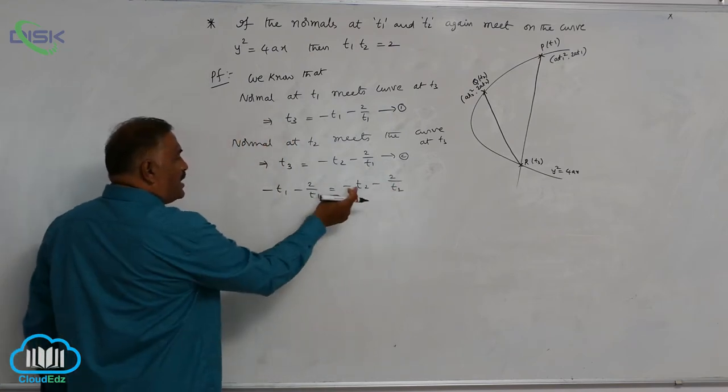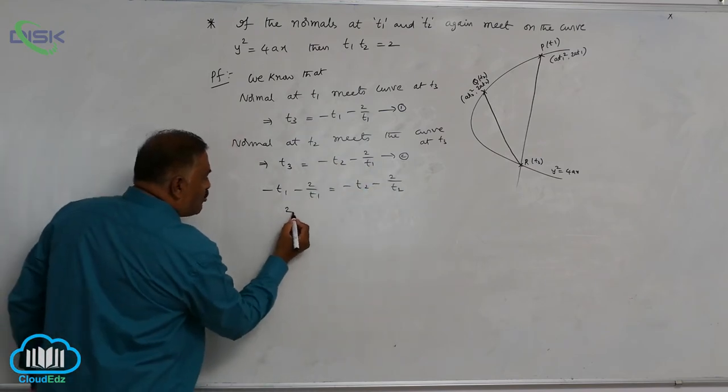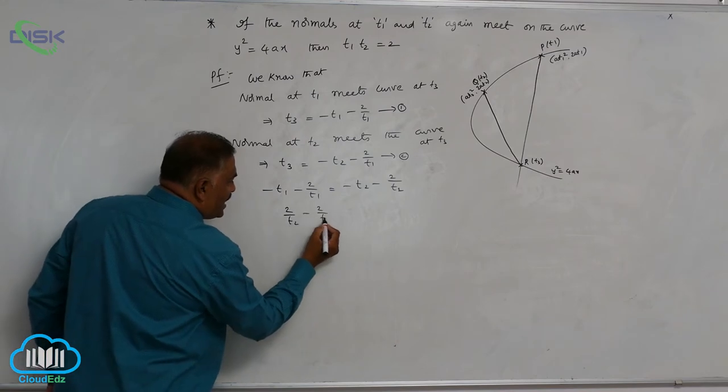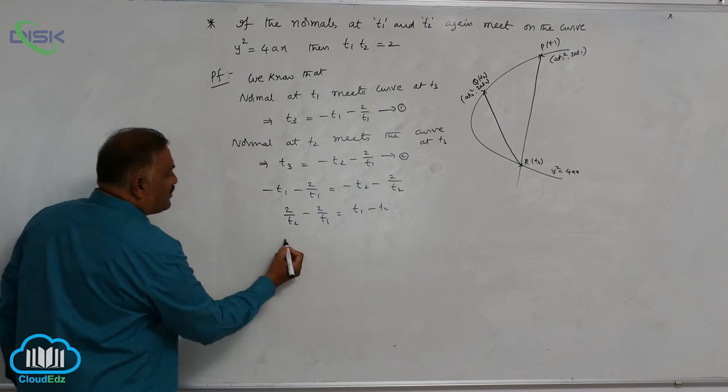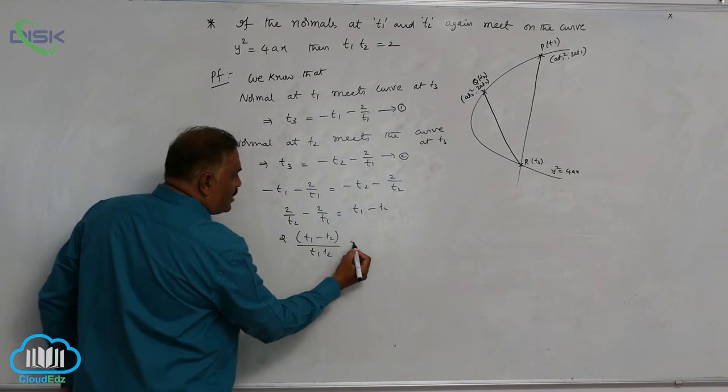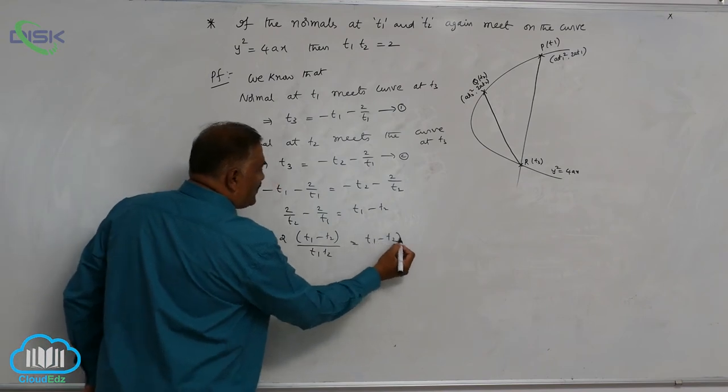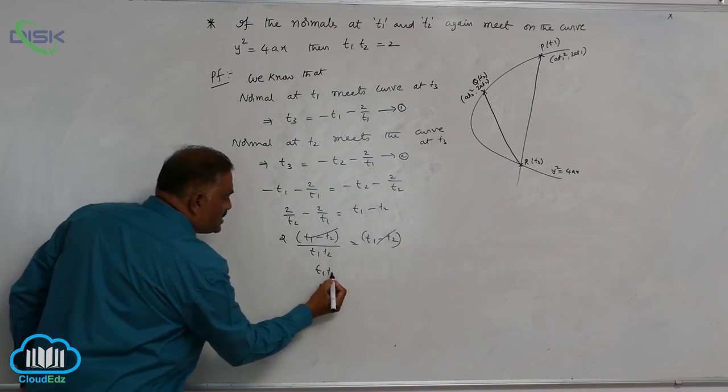Send t1 to that side, 2/t2 to this side. So 2/t2 - 2/t1 = t1 - t2. Take LCM. 2(t1 - t2)/(t1·t2) = t1 - t2. Now you can cancel off these two. t1·t2 = 2.